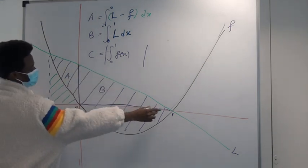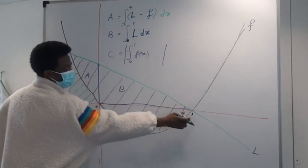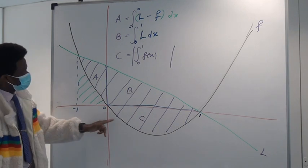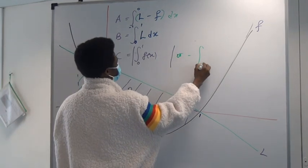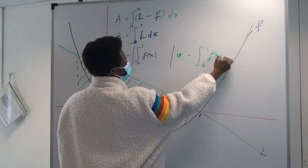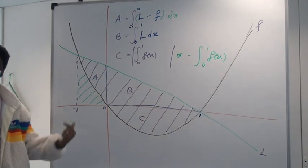Area of B is easy, just area under this line, this triangle, between zero and one. And area of C is going to be negative unless you put your absolute value or you have minus outside the brackets, outside the integral sign, to neutralize the negativity.